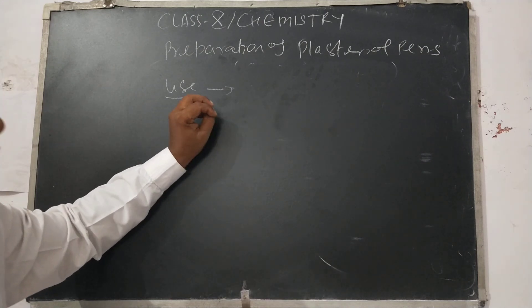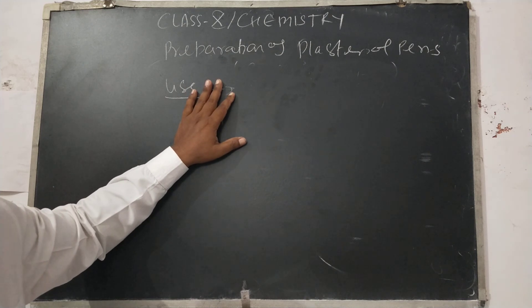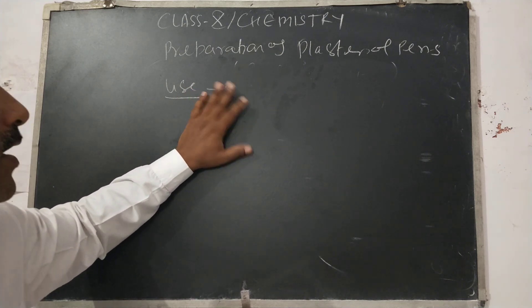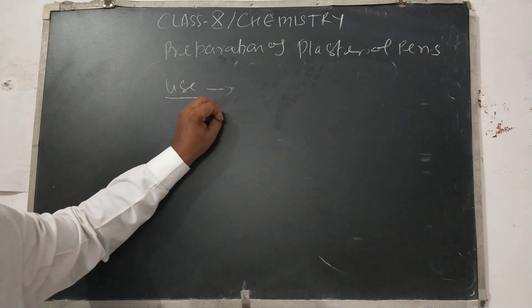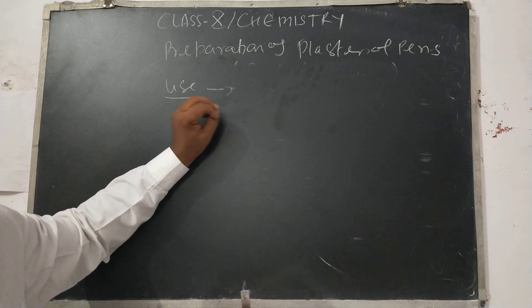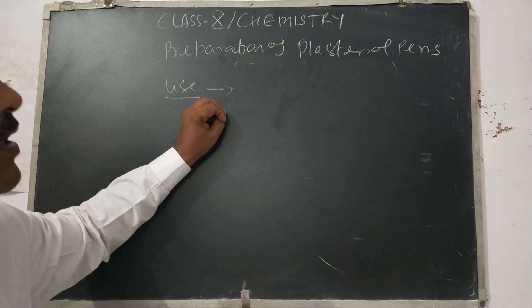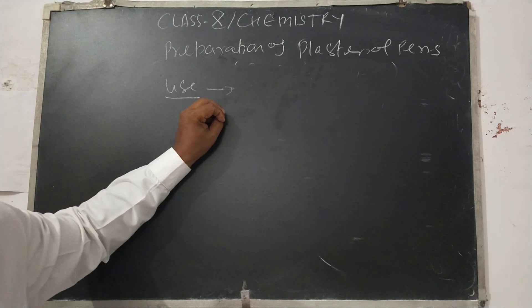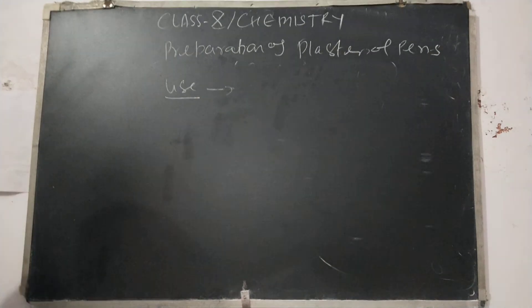So today we learned how bleaching powder is made, how Plaster of Paris is formed and what its uses are, and what its chemical properties are. With this, Chapter 2 is almost complete. In the next video lecture we will focus on Chapter 3: metals and non-metals. Thank you, have a nice day.